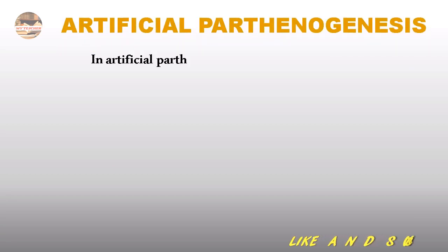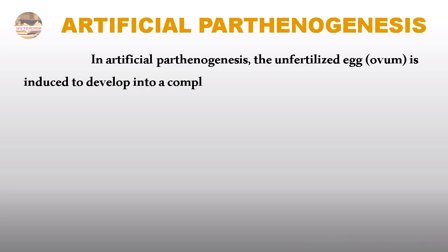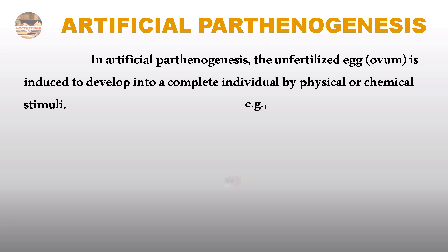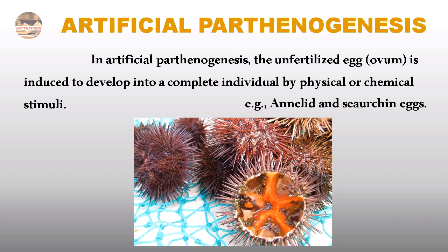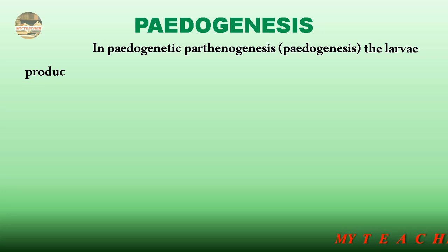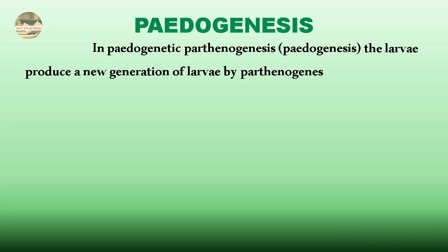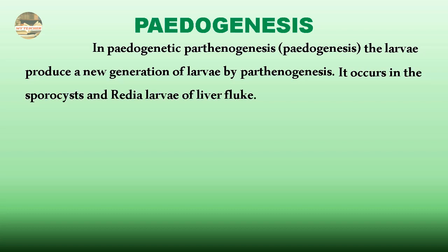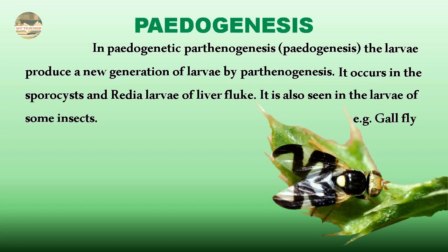Artificial Parthenogenesis: the unfertilized egg or ovum is induced to develop into a complete individual by physical or chemical stimuli. Examples are annelid and sea urchin eggs. Pedogenesis: in Pedogenetic Parthenogenesis, the larvae produce a new generation of larvae by parthenogenesis. It occurs in the sporocyst and redia larvae of liver fluke, and is also seen in the larvae of some insects like the gallfly.